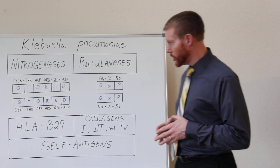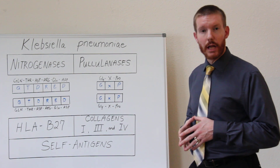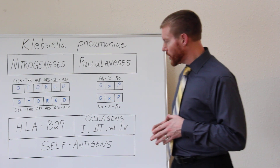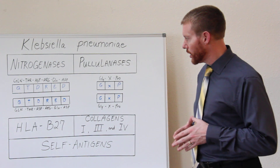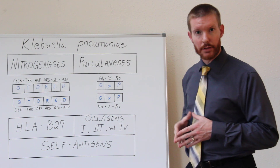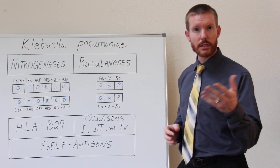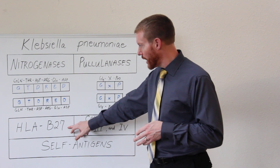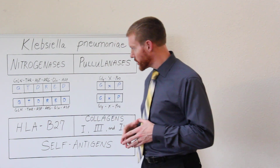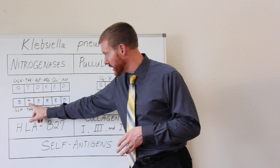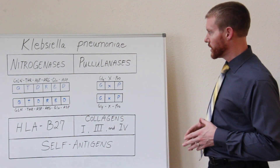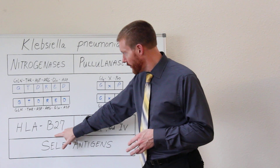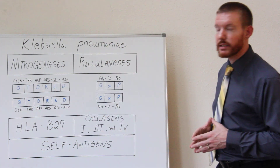HLA-B27 is a gene that the majority of individuals with AS have. Not everyone with AS is positive for HLA-B27, but the majority of individuals are. HLA-B27 is a gene that codes for proteins on the surface of cells. These cells are in the ligaments, tendons, joints, and discs of the spine. And you can see here HLA-B27 is also represented by an amino acid sequence represented by the same letters QTDRED. So you can see that the protein produced by the Klebsiella bacteria and HLA-B27 both have the exact same amino acid sequence.